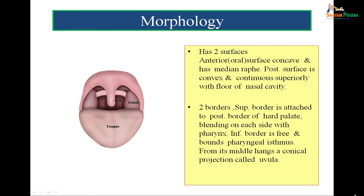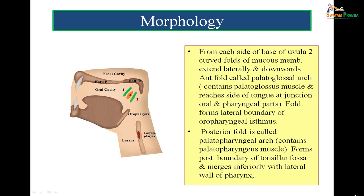The soft palate has two surfaces: the anterior surface is concave and the posterior surface is convex. It has two borders: the superior border is attached to the posterior border of the hard palate, blending on each side with the pharynx, while the inferior border is free. In its middle hangs a conical projection called the uvula. When the person opens the mouth, one can see the uvula hanging down and the upper border attaching to the posterior border of the hard palate.